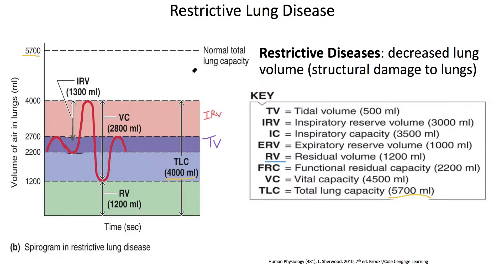You'll notice they're both decreased by 1,700. This 1,300 in the healthy lung — that's 3,000, a 1,700 difference. And this difference right here of 2,800 — usually that's 4,500. That refers to the maximum amount of air I can inhale, which makes perfect sense. That went down 1,700 because you had damage to the lungs. That number is proportional to the damage.